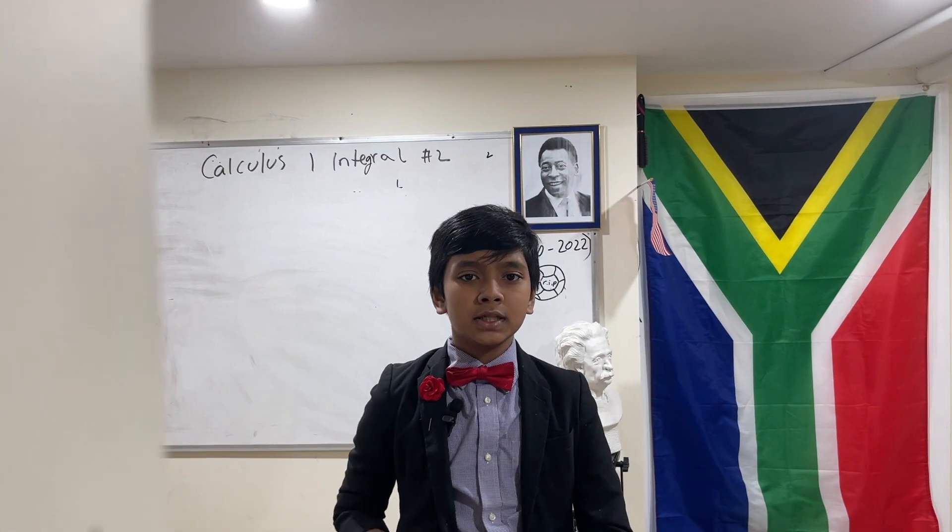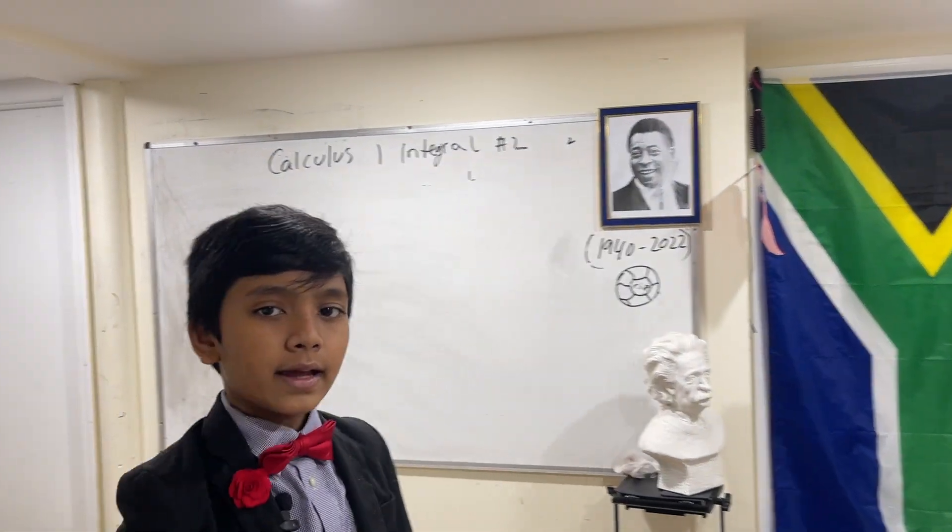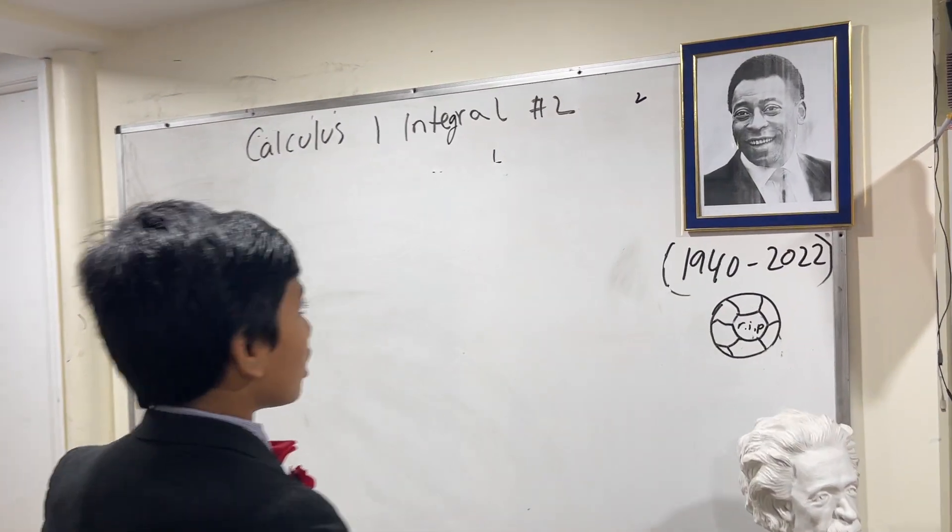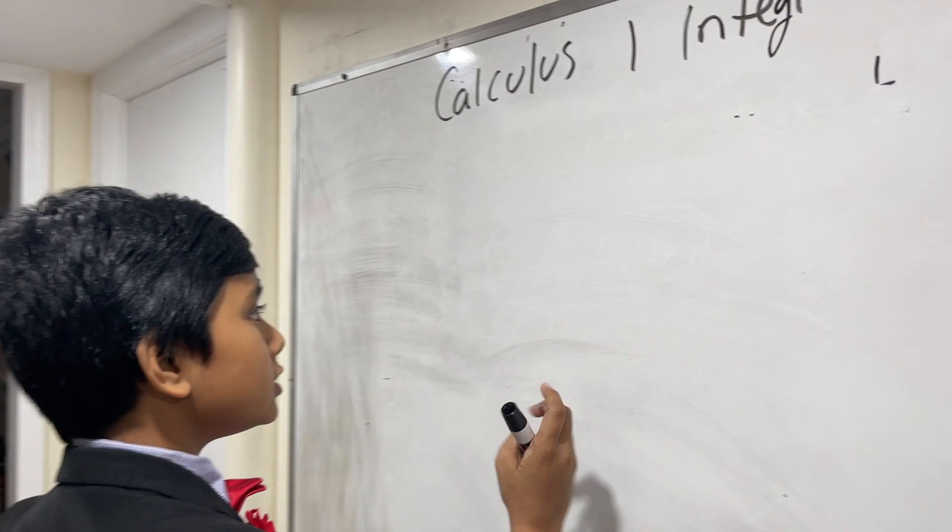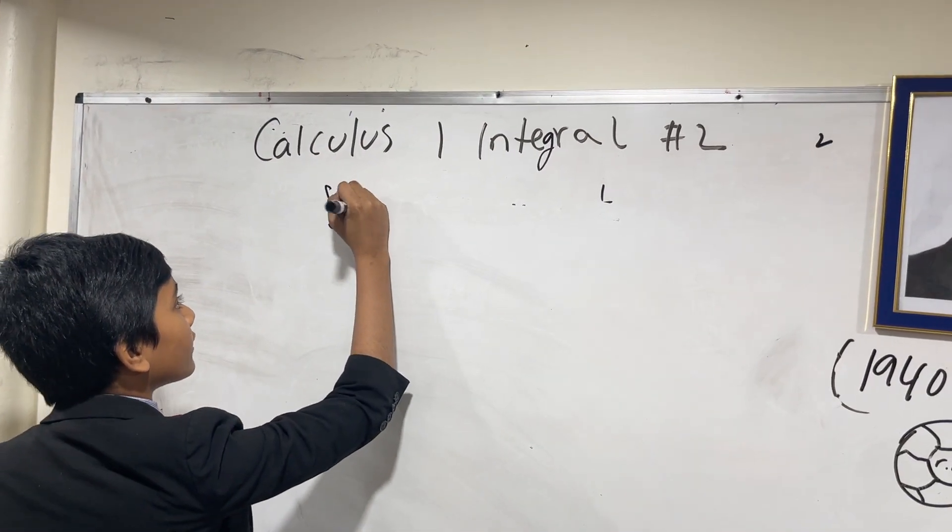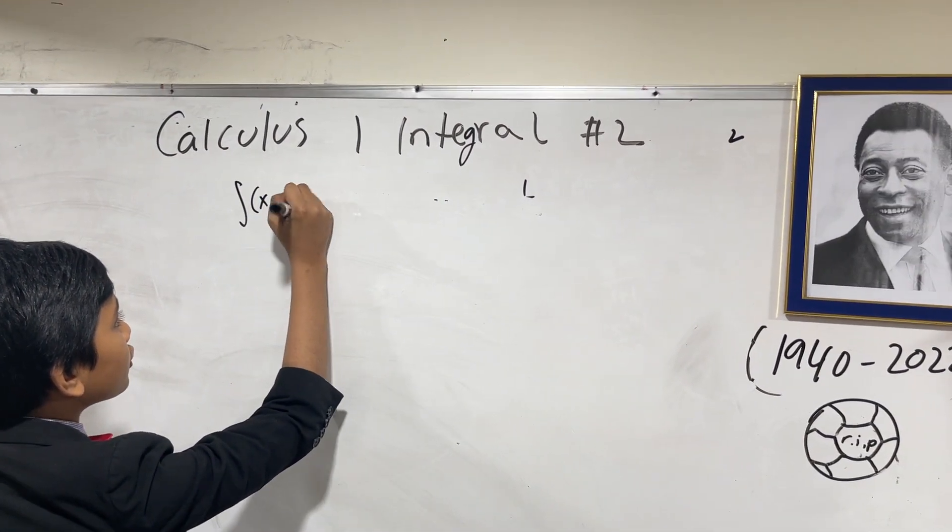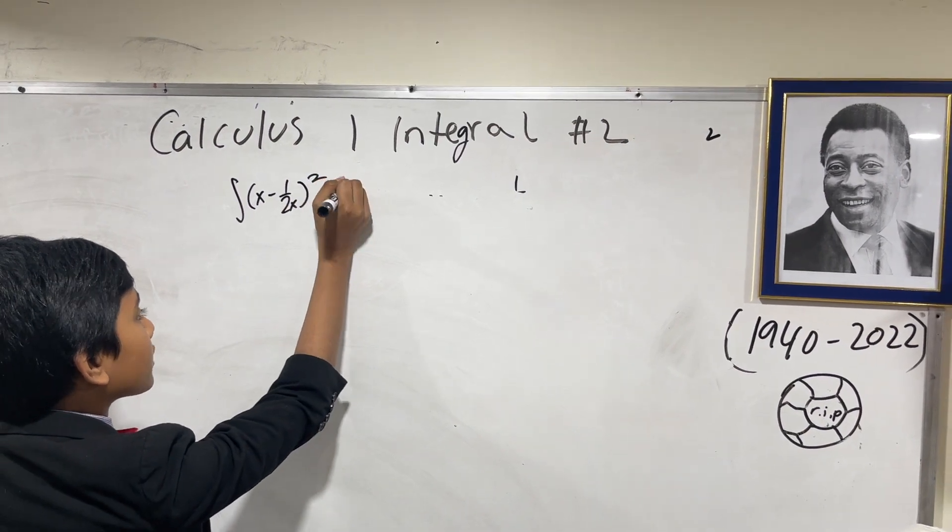Hello everybody, my name is Sabrina Isaac Barrett from Mary's Science Club, and today we are going to be doing calculus integral number 2. We're going to be taking the integral of x minus 1 over 2x all squared dx.